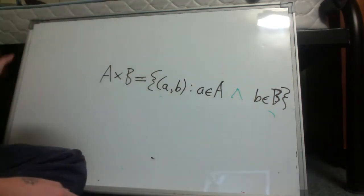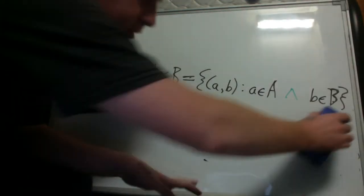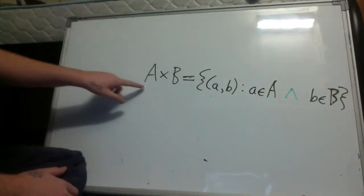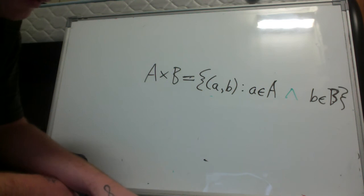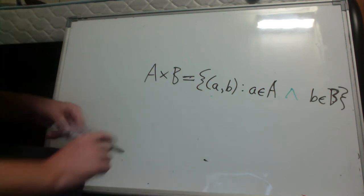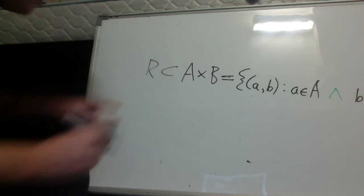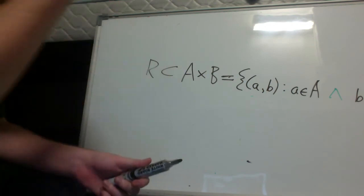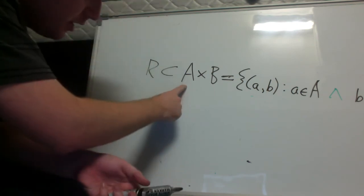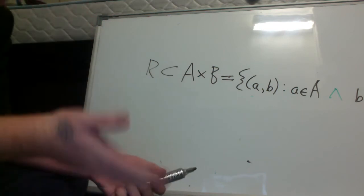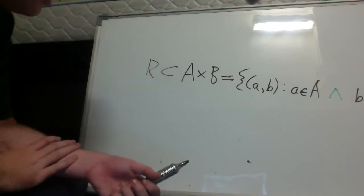So now a relation, a binary relation on the Cartesian product of two sets, is some subset, denoted r, of the Cartesian product of a and b, where a and b could be any set, any two sets.